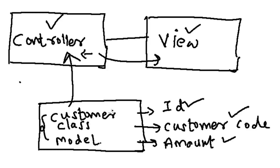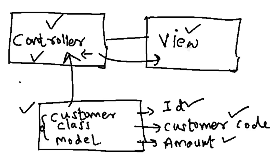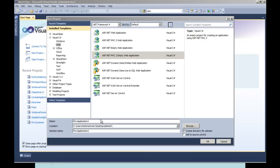Let's do the simple sample: create a Customer class, create the object in the Controller, flourish it with some dummy data, pass it to the View and display the same. Let's open our Visual Studio and go to the new project.